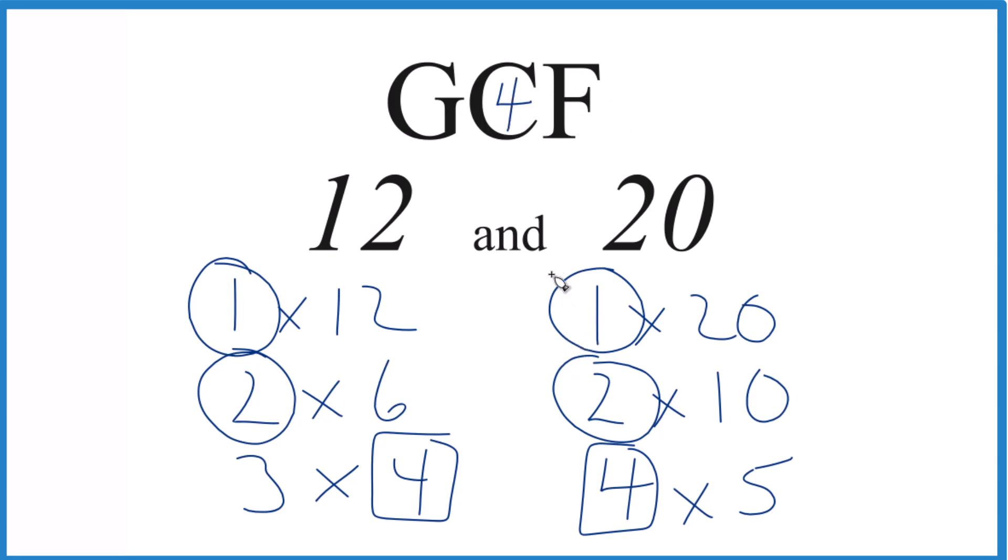There are other ways you could do this. You could use prime factorization. But this method works really well for numbers about the size here, 12, 20, smaller numbers.